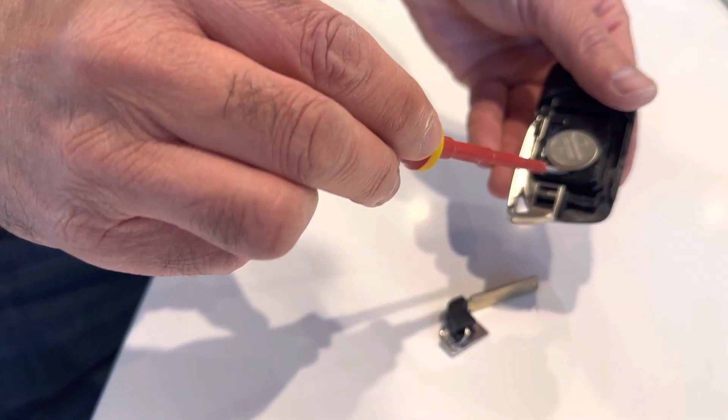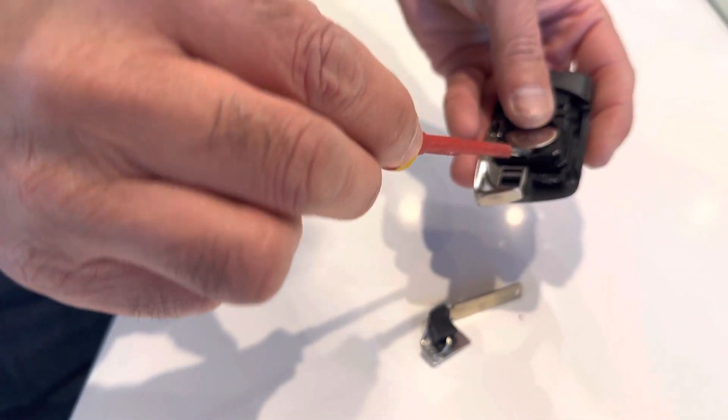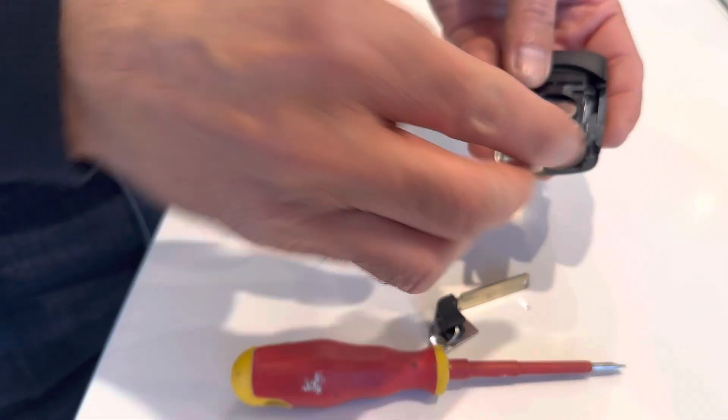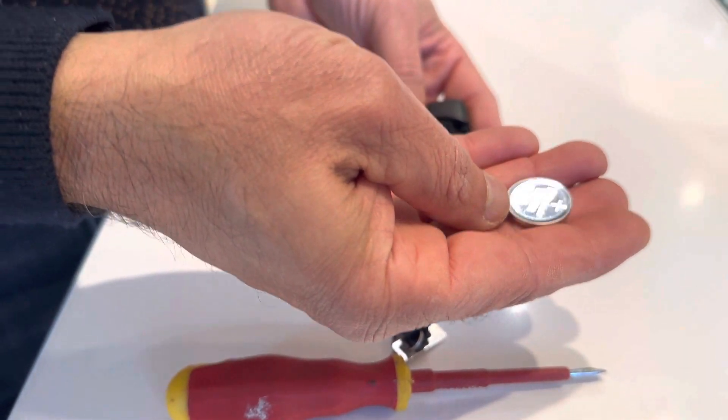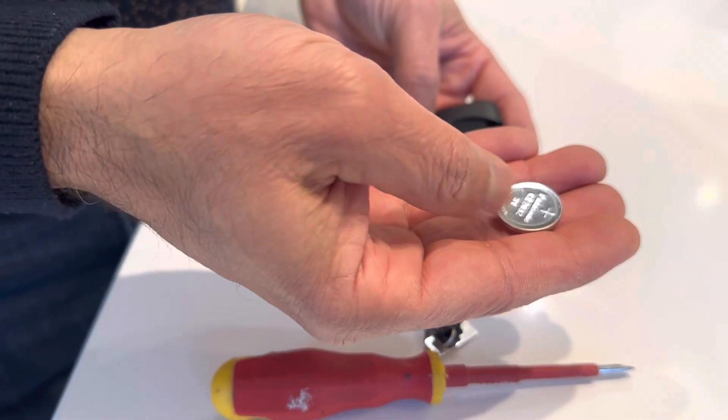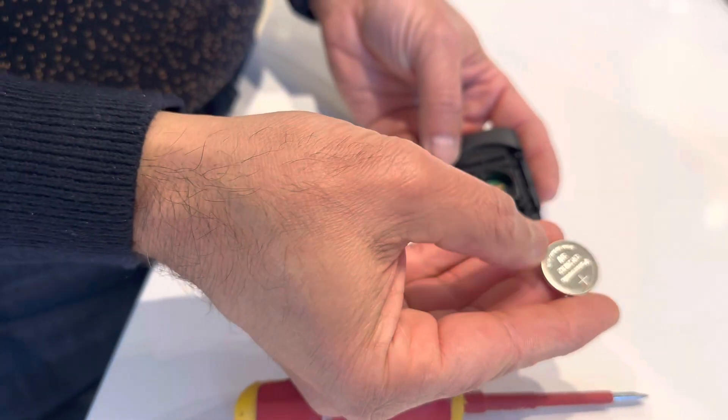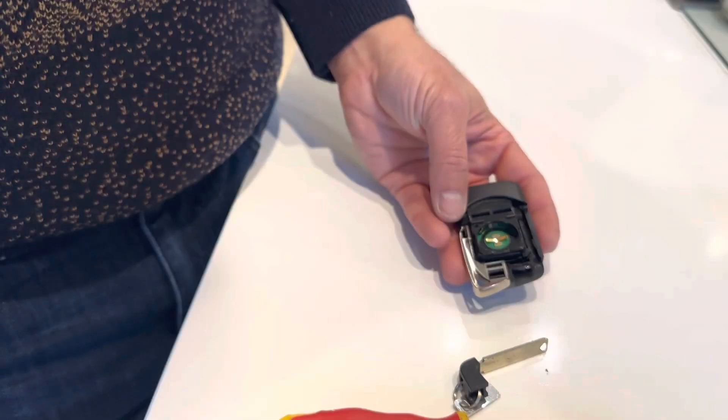Using the screwdriver in the slot, pull the battery out. This battery takes a CR2032 3-volt, so we need to replace the battery. We've got a new one already.